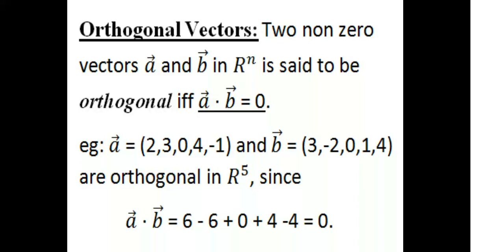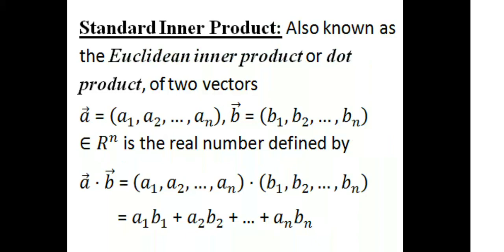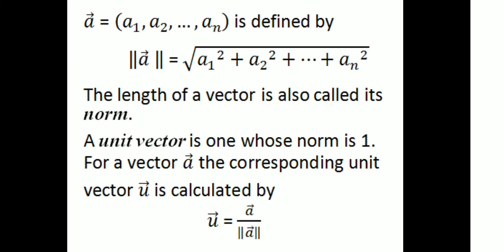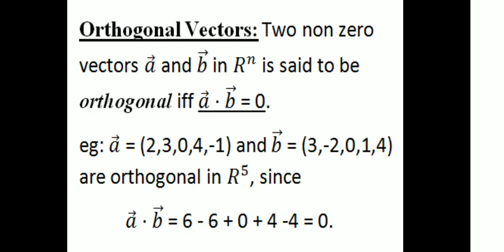Now we are going to take the class. What is the dot product? What is the length of a vector? Unit vector — that's a recall. This is orthogonal vectors. Two non-zero vectors, vector a and vector b in R^n, are said to be orthogonal if and only if a dot b equals 0. Then the two vectors are orthogonal.